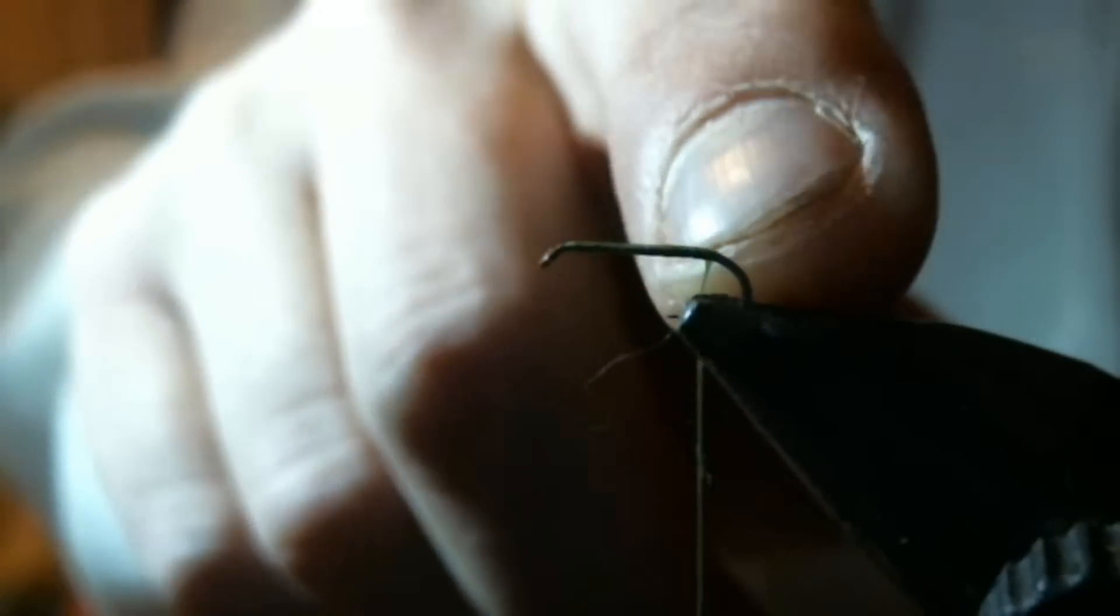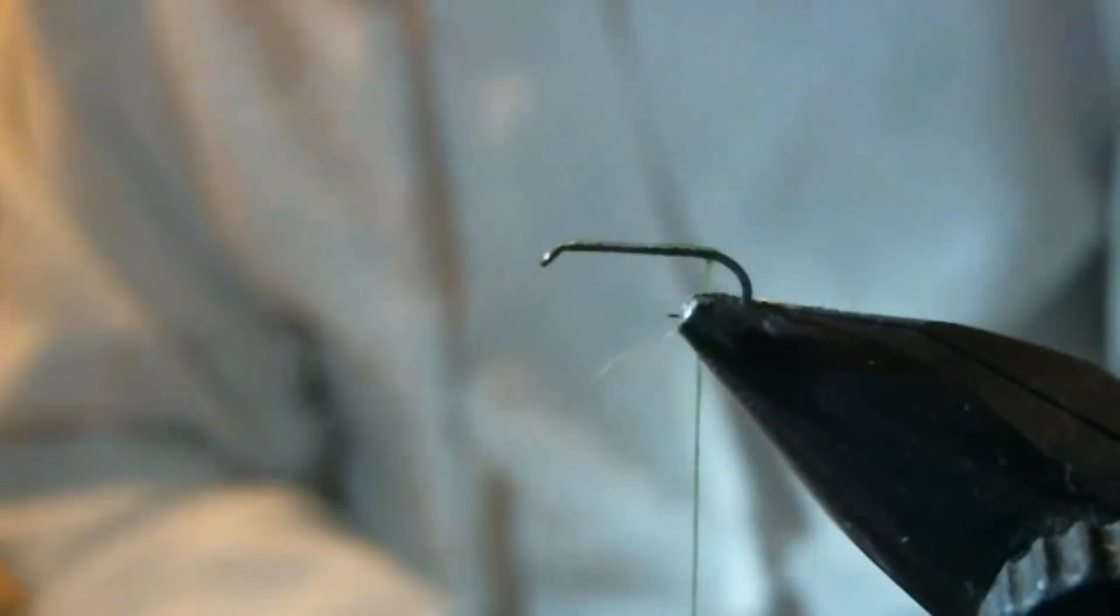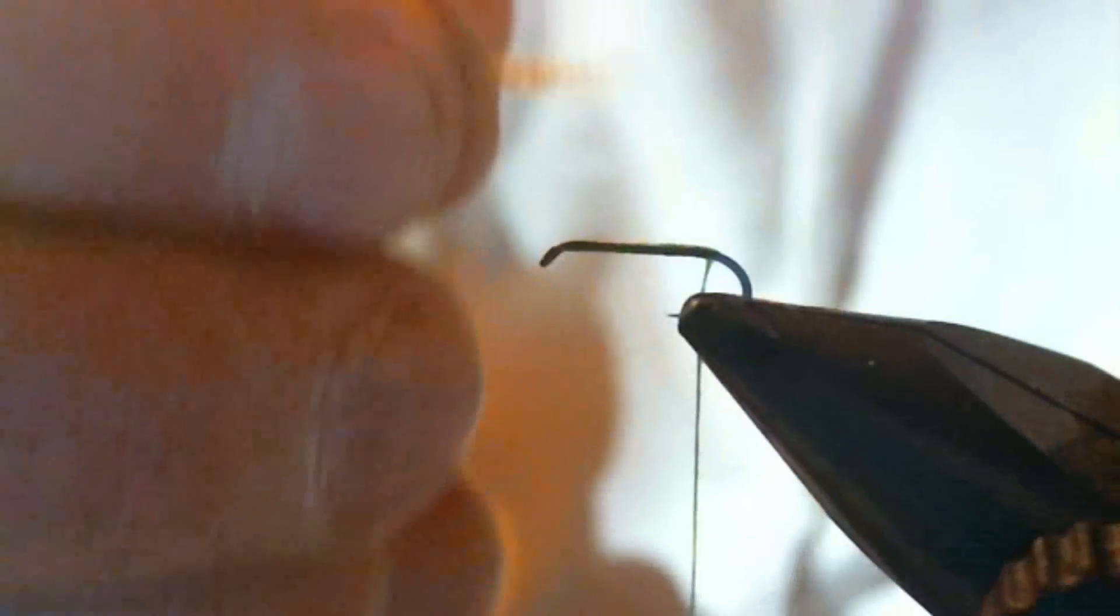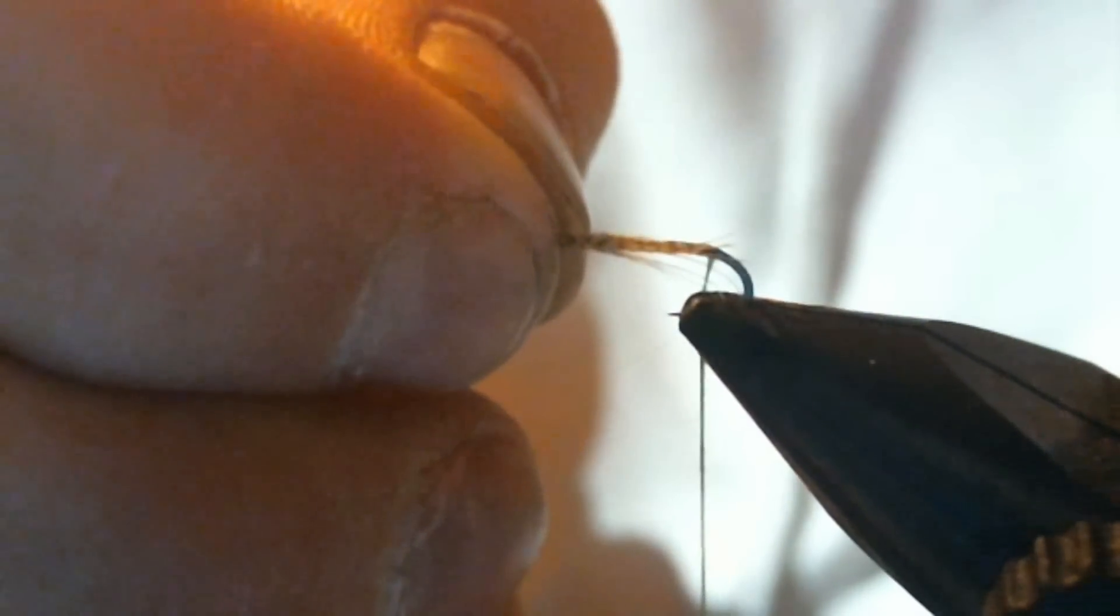I started from the pilot and went all the way back with the thread to where the tail starts and cemented it. That's how you start, I start every fly. First thing we're going to tie in is our tail which is wood duck, and you measure your tail for the length of it, no longer than the length of the hook.